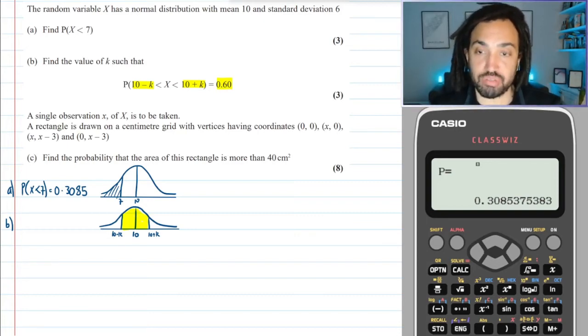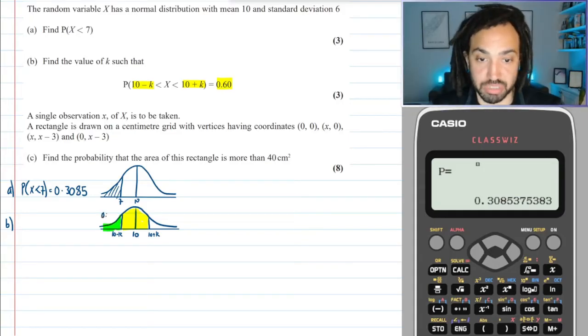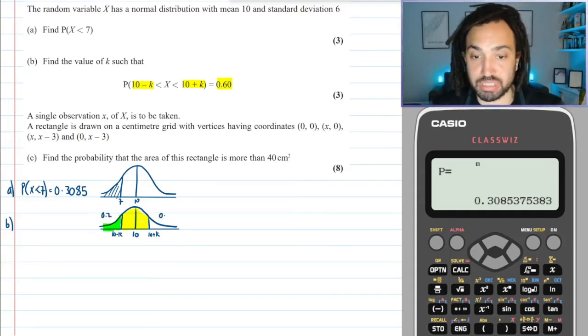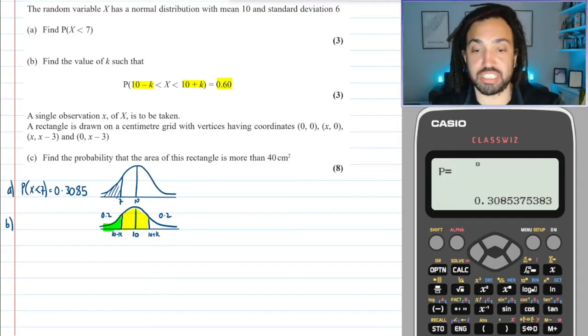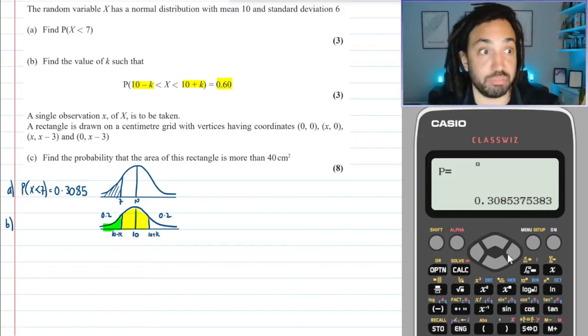So this area here equals 60 percent. Well, if that yellow area equals 60 percent, then by symmetry this green area here will equal 20 percent, because we'll have 20 percent here, 20 percent here, and then that gives us 60 percent in the middle. So let's just find the value which will give me 20 percent to the left.